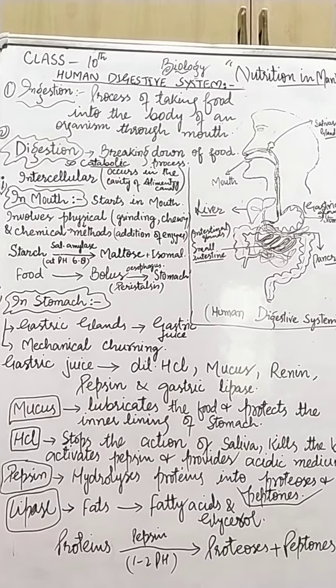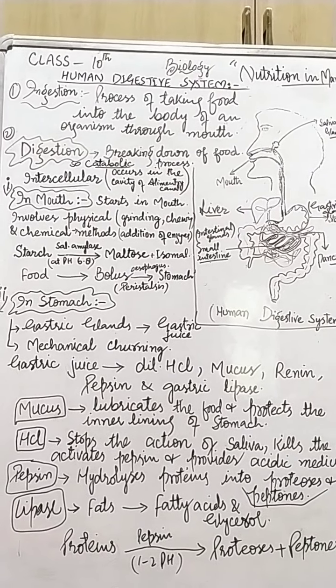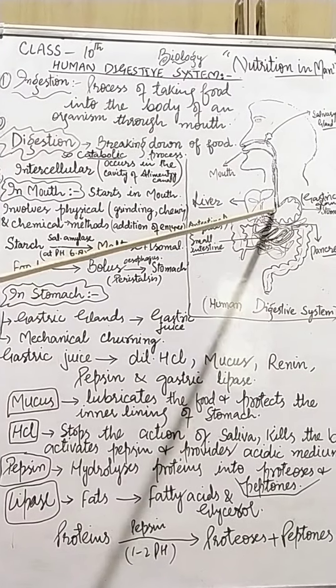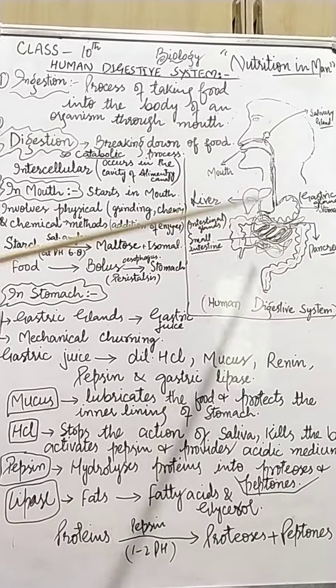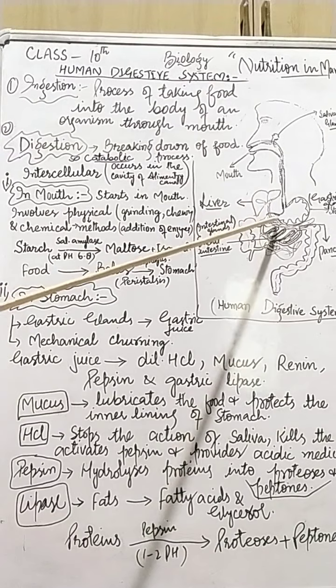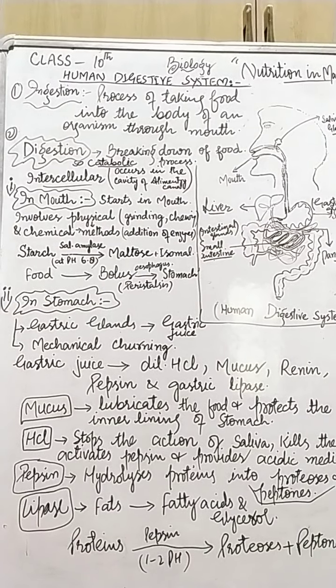So this is the digestion of food in mouth. I think it is sufficient for today. Then the food enters into the stomach through the esophagus, and the digestion of food occurs there also. We will talk about the digestion of food in stomach in our next class. Till then, goodbye.